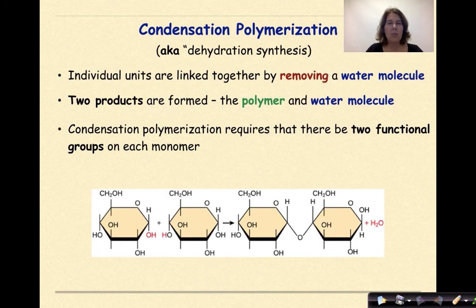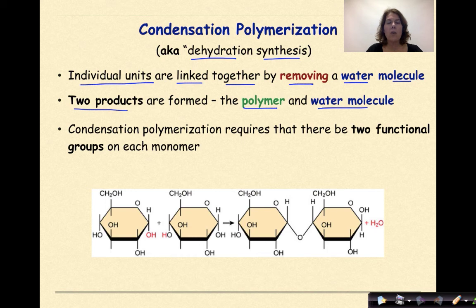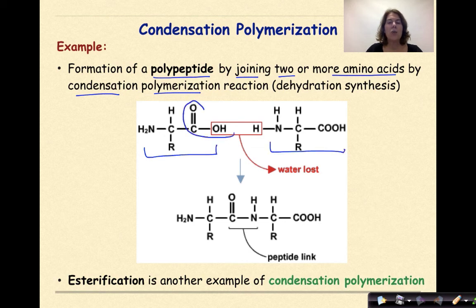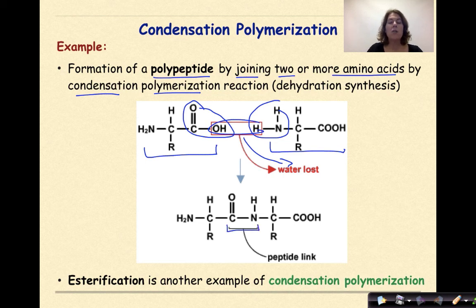Let's talk about condensation polymerization, also known as dehydration synthesis, where individual units are linked together by removing a water molecule. Two products are formed: the polymer and a water molecule. Condensation polymerization requires that there be two functional groups in each monomer. An example of this is the formation of a polypeptide by joining two or more amino acids. We have an amino acid here and an amino acid here — the acid group coming together with the amine group. The water molecule is lost and we form the amide bond, also known as a peptide bond.